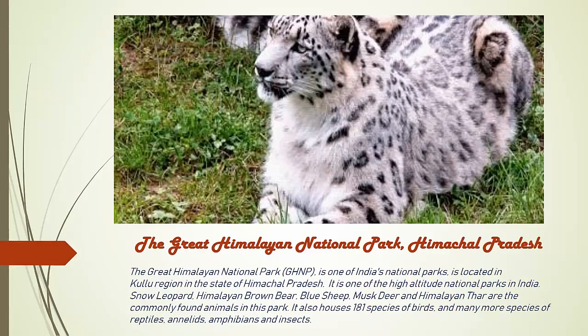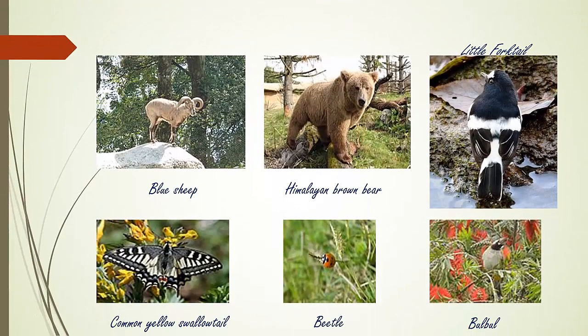The Great Himalayan National Park, also known as GHNP, is an Indian national park located in the Kullu region of Himachal Pradesh. It is one of the high-altitude national parks in India, housing 181 species of birds and many more species of reptiles, amphibians, and insects. Examples of wildlife include Blue Sheep, Himalayan Brown Bear, Little Forktail, Common Swallow, and Bulbul.